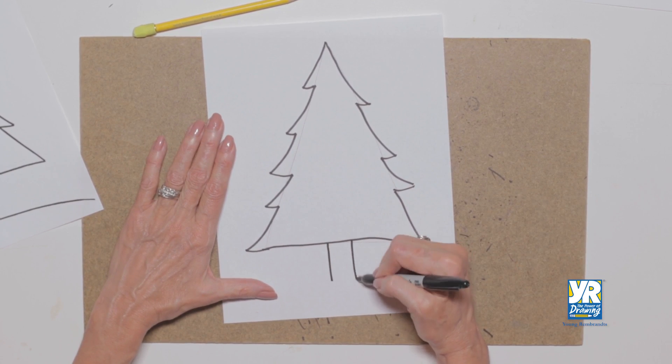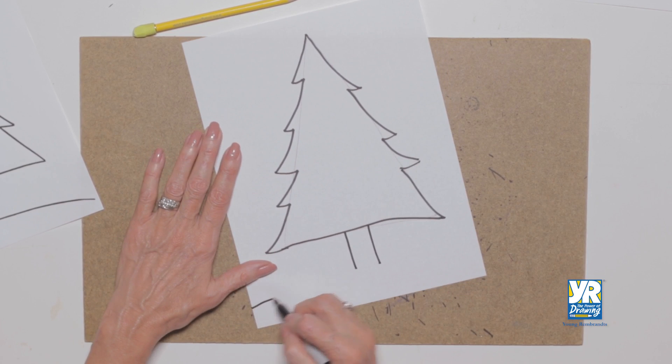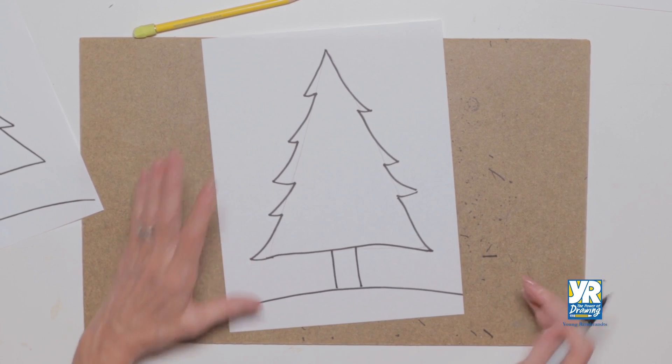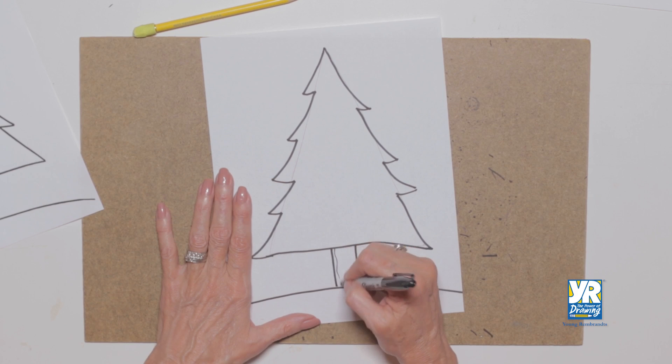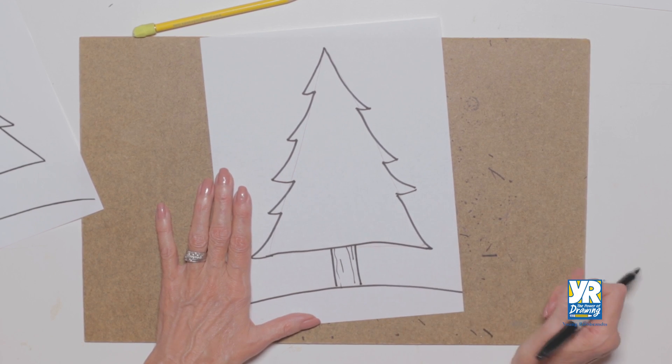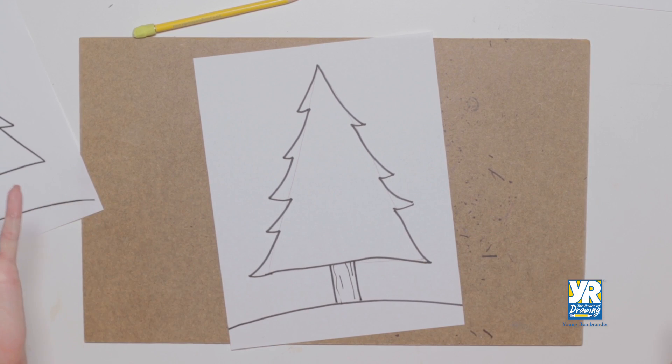Now I've got my trunk and I'm going to put it on the ground. Now to add a little texture, I can put some lines in my trunk to have the bark, and I have my pine tree.